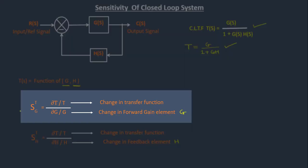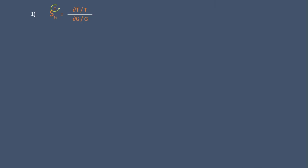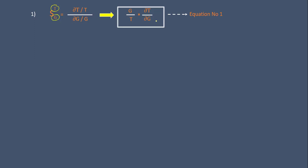Let us first discuss the sensitivity of the transfer function with respect to the forward gain element G in detail. This sensitivity is given by ∂T/T upon ∂G/G, which can be rewritten as G upon T multiplied by ∂T/∂G. Let us mark this as equation number one. To find the sensitivity formula, we need to find the value of ∂T/∂G.